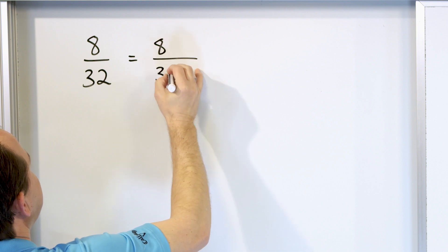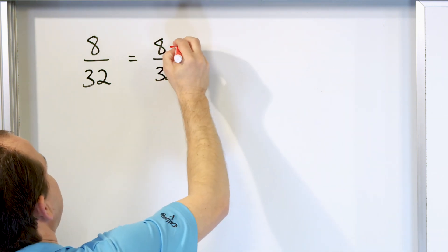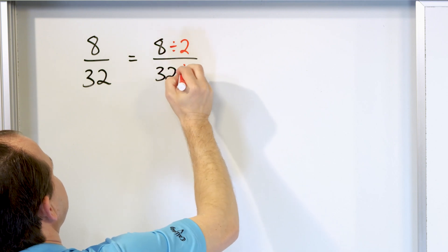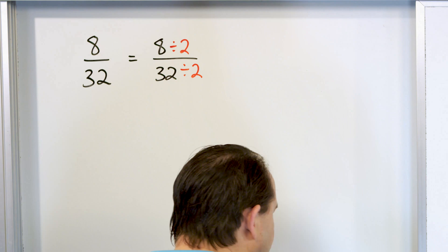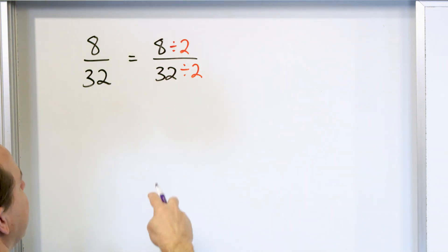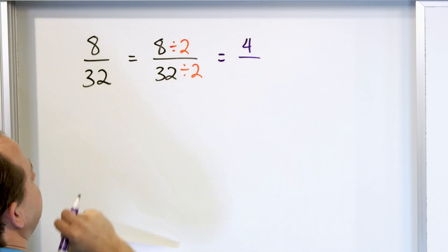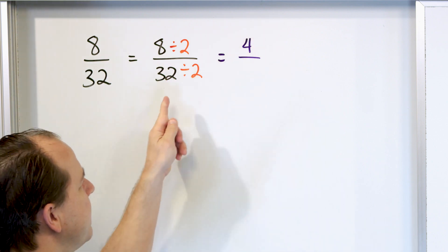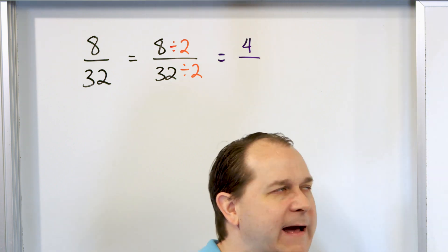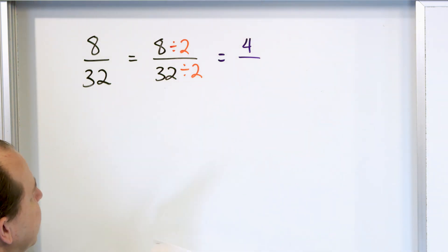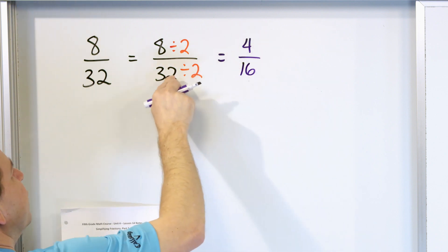Let's take 8/32 and divide by two on the top and two on the bottom. Because we're dividing on the top and the bottom, the fraction value doesn't change. So what is 8 divided by 2? That is 4. What is 32 divided by 2? That might be a little harder to know in your mind - you might have to go off to the side. When you divide this, the answer is 16 because 16 times 2 is 32.